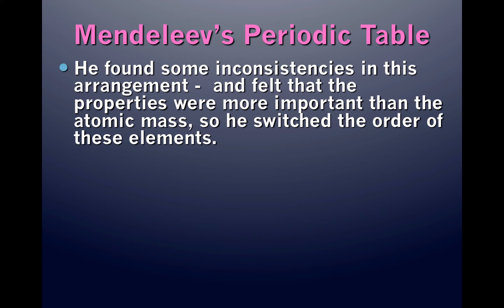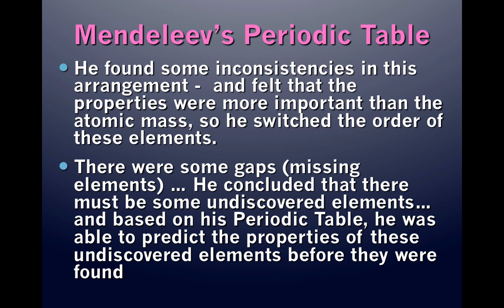Mendeleev found some inconsistencies in this arrangement and felt that properties were more important than atomic mass, so he switched the order of elements that did not fit the trend. He also found some gaps — missing elements — and concluded that there must be undiscovered elements. Based on his periodic table, he was able to predict the properties of these undiscovered elements before they were even found.